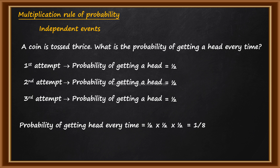The three attempts are independent. So the events are independent. When you calculate the total probability — the probability of getting a head every time — you multiply: 1 by 2 times 1 by 2 times 1 by 2, which equals 1 by 8. We have just multiplied the three probabilities. The general formula is: probability of A intersection B is equal to probability of A into probability of B.